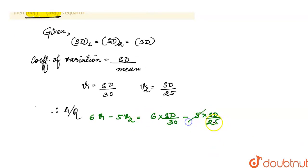Solving this, we get standard deviation over 5 minus standard deviation over 5, which equals 0. Therefore, 6v1 minus 5v2 equals 0. That's all, thank you.